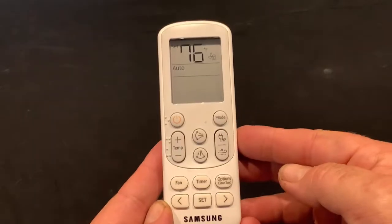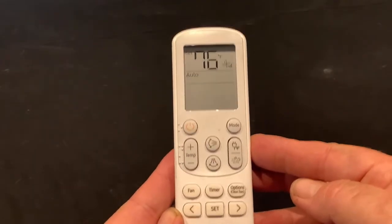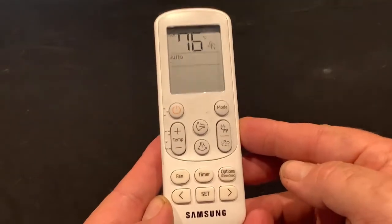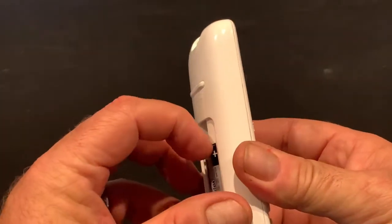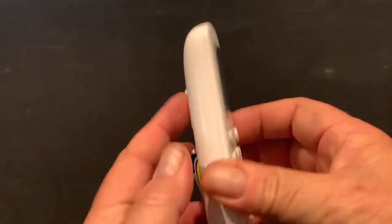First thing we need to do is take the remote and switch it over into programming mode. In order to do that, we're going to take off the back cover and remove one of the batteries. I just lean it out just a little bit like that.